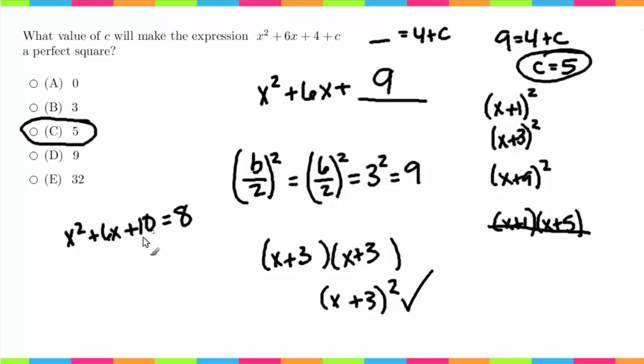Traditionally, you would subtract 8 from each side, and then you'd hope that you could find two numbers that nicely multiply to the C term and add to the B term. The other way to do this would be to complete the square, so let's just walk through this quickly.